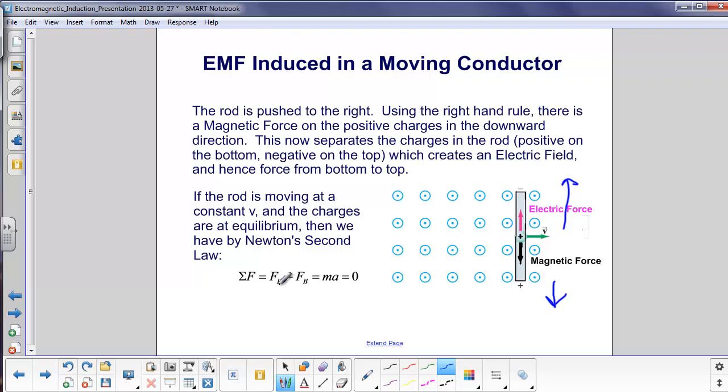So the electric force, which is in the up direction, minus the magnetic force equals ma. They're not moving anymore, these charges aren't moving, so that's zero.